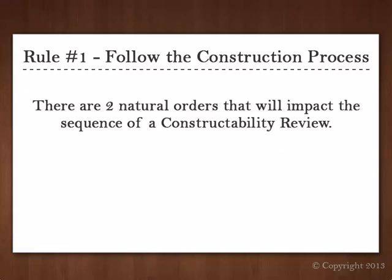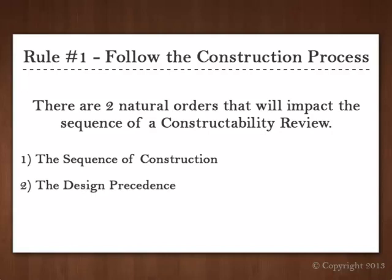There are two natural orders that will impact the sequence of your review. First, the sequence of construction — generally, the logical sequence of construction aligns pretty closely with the logical sequence of a constructability review, though this is a rule of thumb, not a steadfast rule. Second, the design precedence — in the event of a conflict, which system takes precedence? A structural element will usually take precedence over an architectural element, while an architectural element will usually take precedence over a mechanical element. These are just rules of thumb, as each situation is unique.